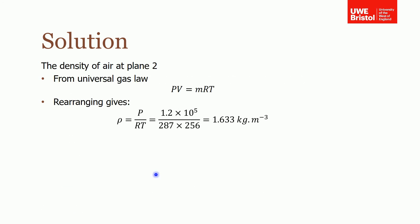Finally, the last part of the question asks you to find the density of air at plane 2. Again, we find this from the universal gas law. Rho is a function of the pressure, R, and T.